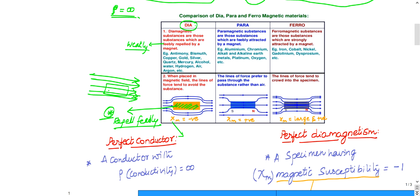Examples of paramagnetic substances include aluminium, chromium, alkali and alkaline earth metals (Group 1A and 2A elements), platinum, and oxygen. The second point: the lines of force prefer to pass through the paramagnetic substance rather than air, so they are lightly attracted. You can see in the diagram that the lines of force are passing through the object.